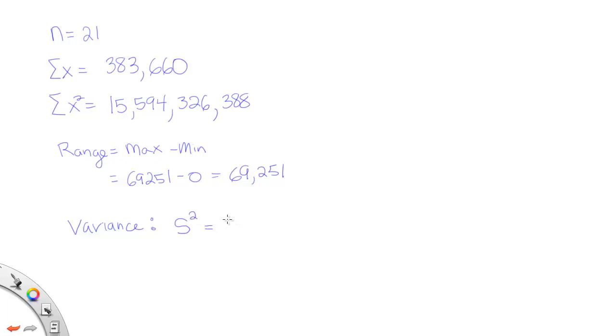And it'll be equal to n times the summation of x squared minus the summation of x quantity squared, divided by n times n minus 1. Once you have that set up, it's really just a matter of plugging in what you were given.